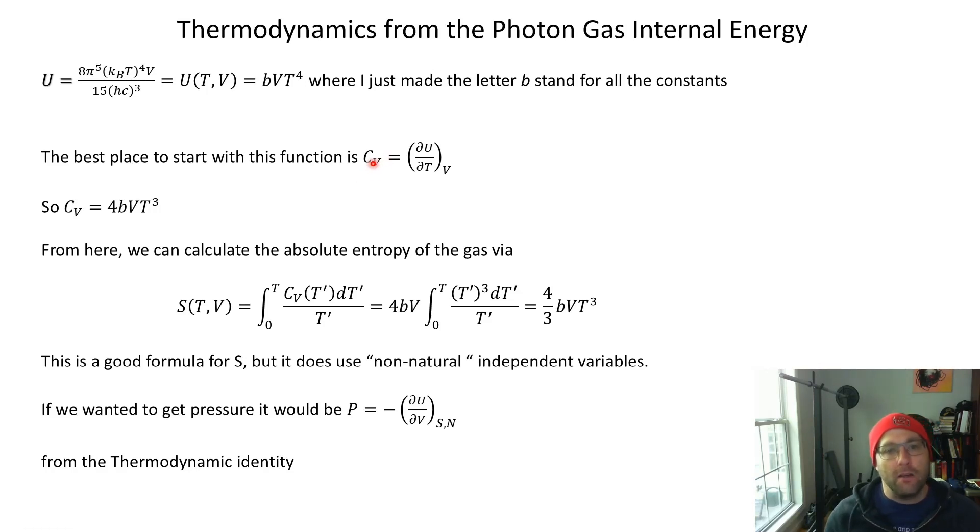When we have U as a function of T, the best place to start is typically with the constant volume heat capacity, because that's explicitly defined as the partial of U with respect to T under conditions of constant V. I'm not writing the N here—you'll see the reason by the end. It's easy to take the partial with respect to T in this expression, so you get the constant volume heat capacity is 4B, where I call B all this junk up here. 4B times V times T cubed.